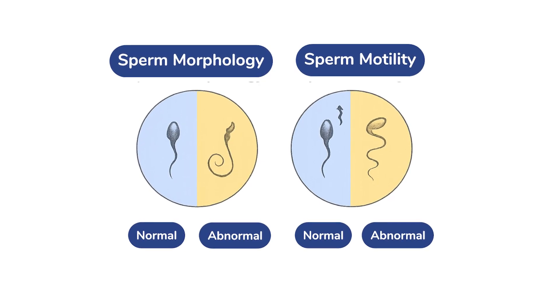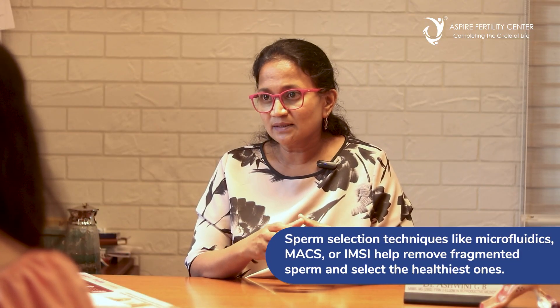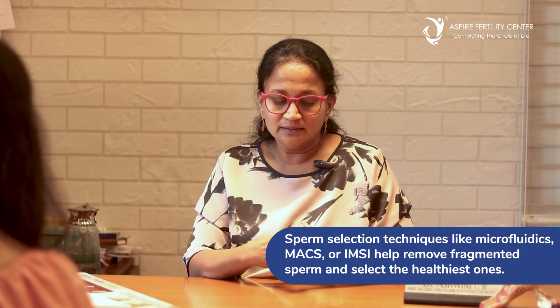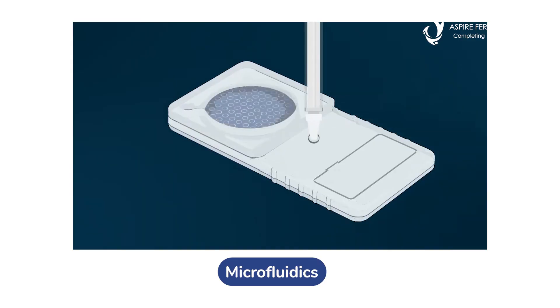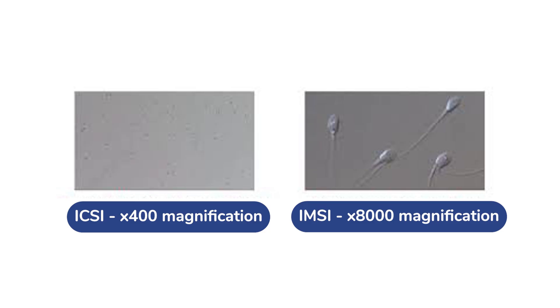Another important reason why an embryo may fail to implant is male factor infertility. If there is severe male factor infertility where sperm motility or morphology is near zero, it becomes much harder to get one good normal embryo for transfer. In such situations, one could consider sperm selection techniques - these help in isolating the most normal population of sperms. These techniques include microfluidics, MACS (magnetic assisted cell sorting), or IMSI, wherein you examine the sperm under high magnification before using it to fertilize an egg.